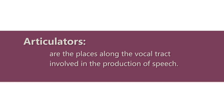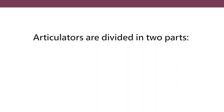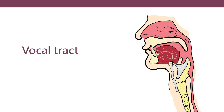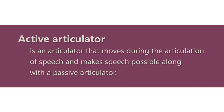The articulators are places or points along the vocal tract that are involved in the production of speech, and they are divided into two parts: active and passive articulators. Active articulators are those that move; passive articulators are those that do not move.